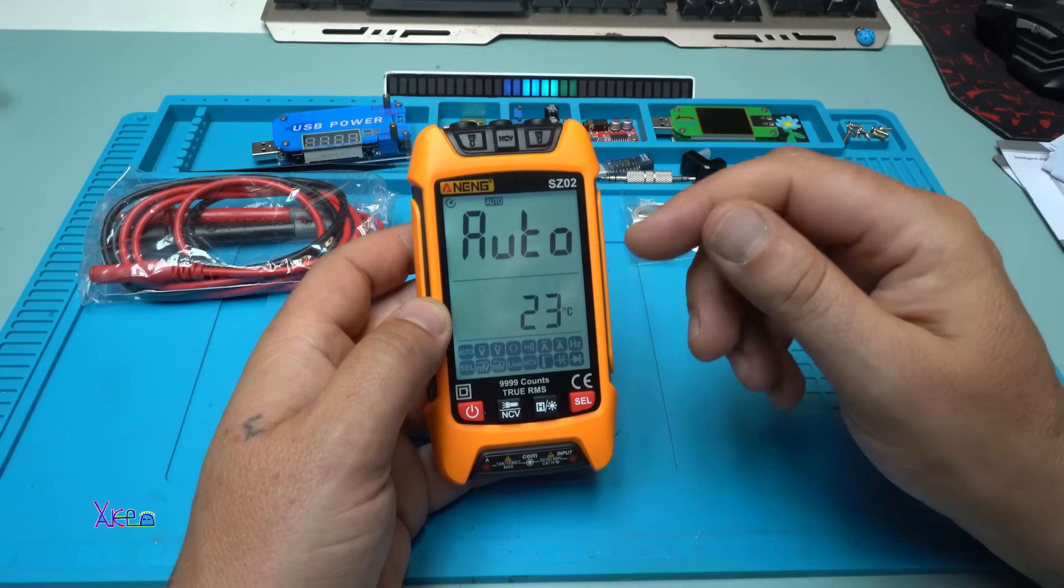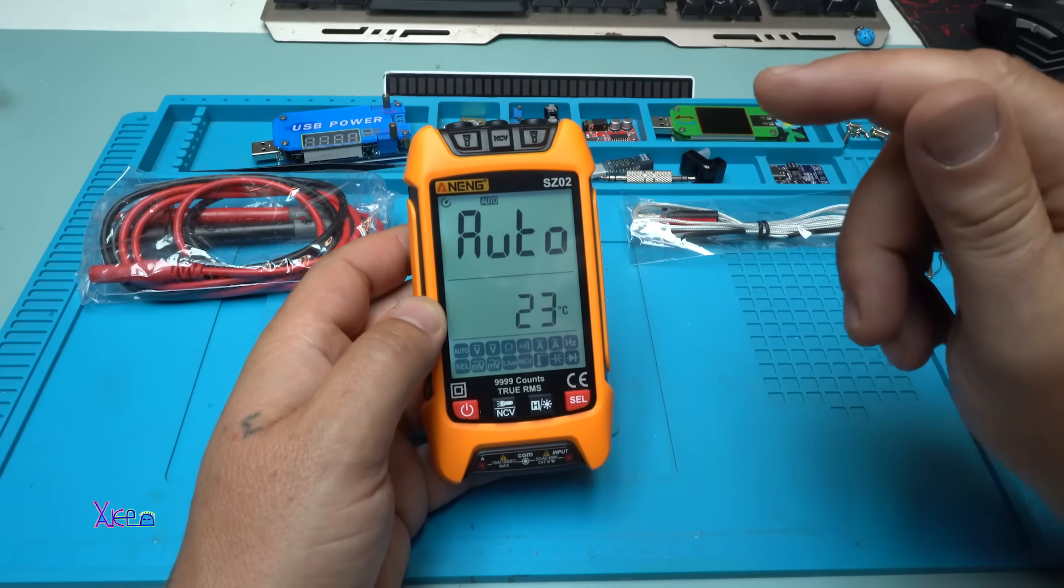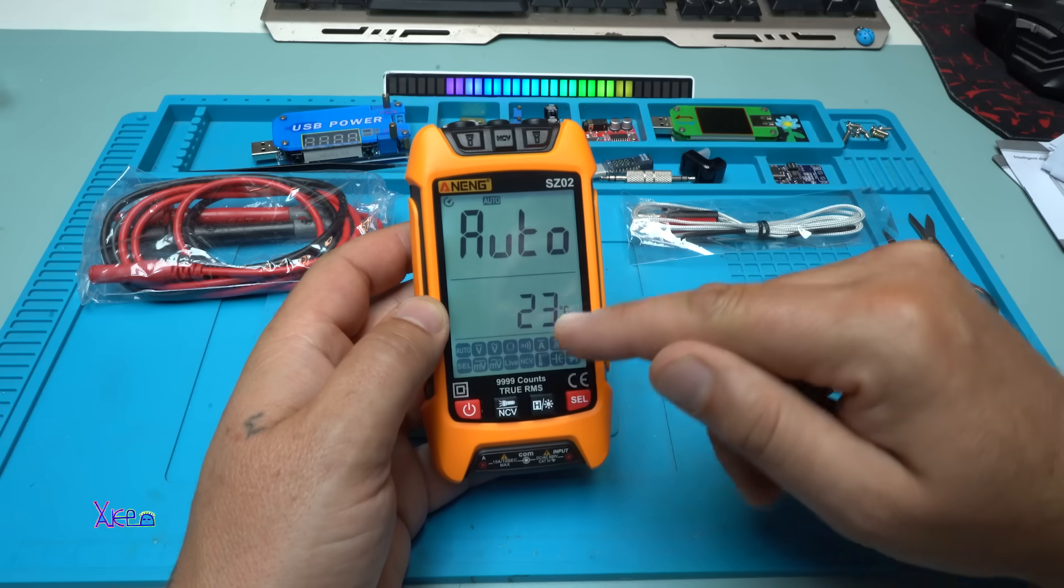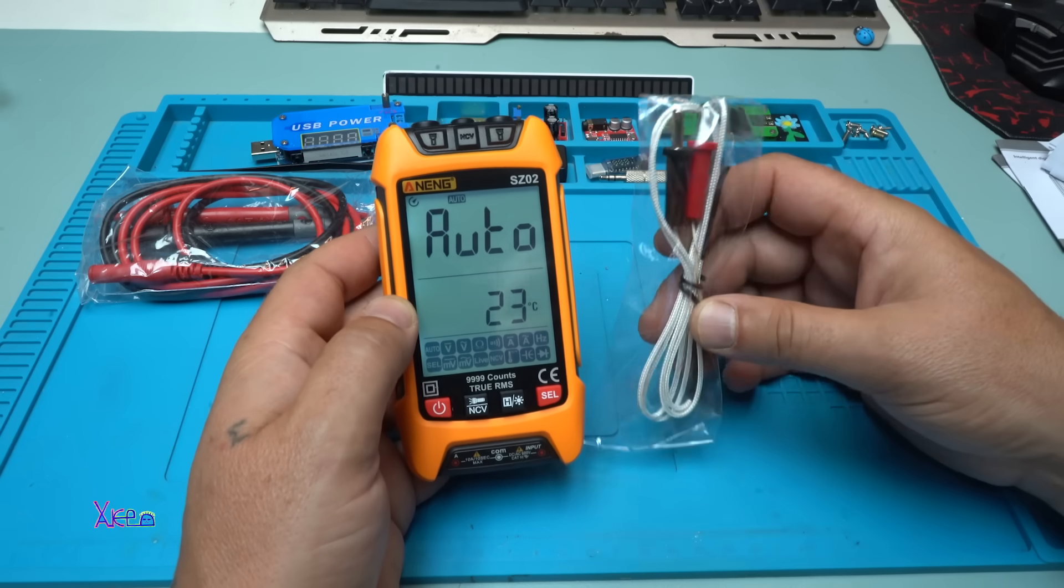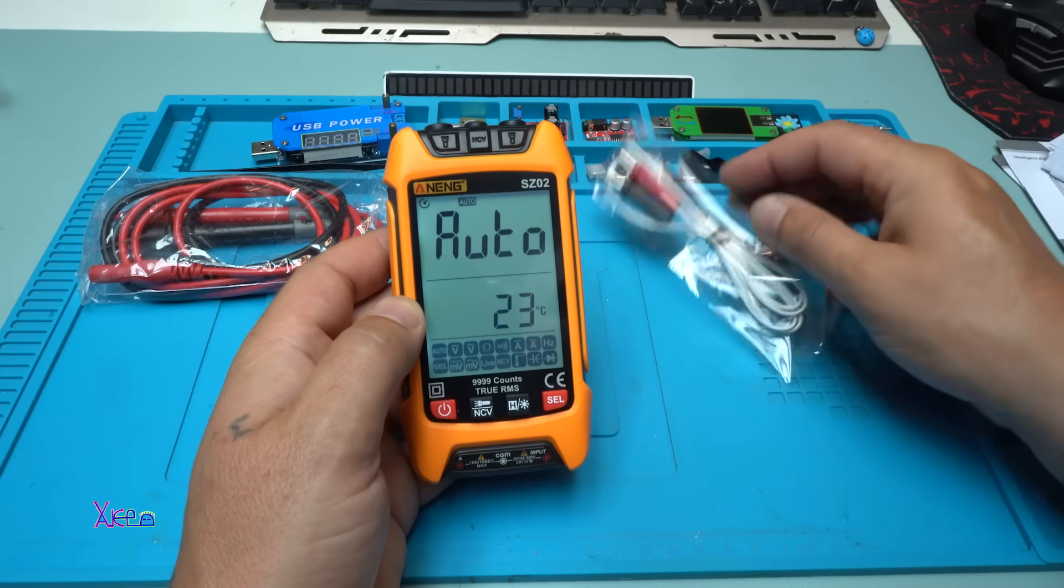And also it has inside a sensor for measuring temperature. And you can see that it's 23 degrees. But also you can use this probe for measuring temperature. Nice.